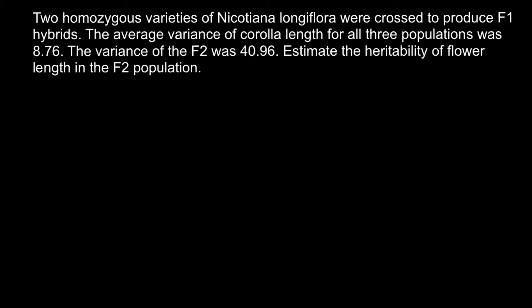Hi, this video is going to be about quantitative genetics. Today's problem is: two homozygous varieties of Nicotiana longiflora were crossed to produce F1 hybrids. The average variance of corolla length of all three populations was 8.76. The variance of the F2 generation was 40.96. Estimate the heritability of flower length in the F2 population.